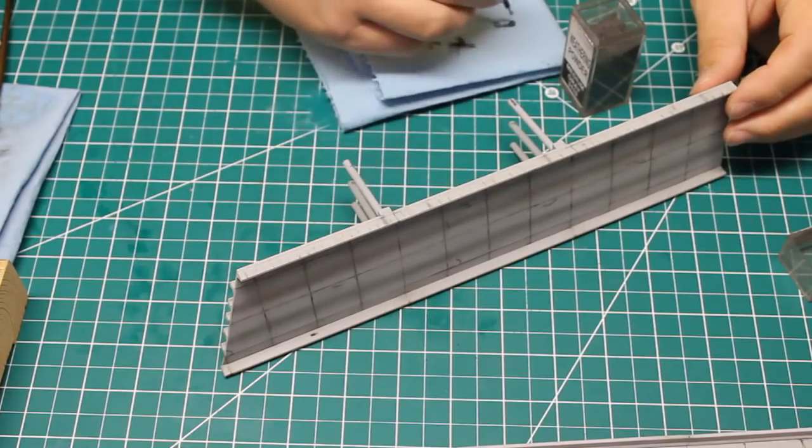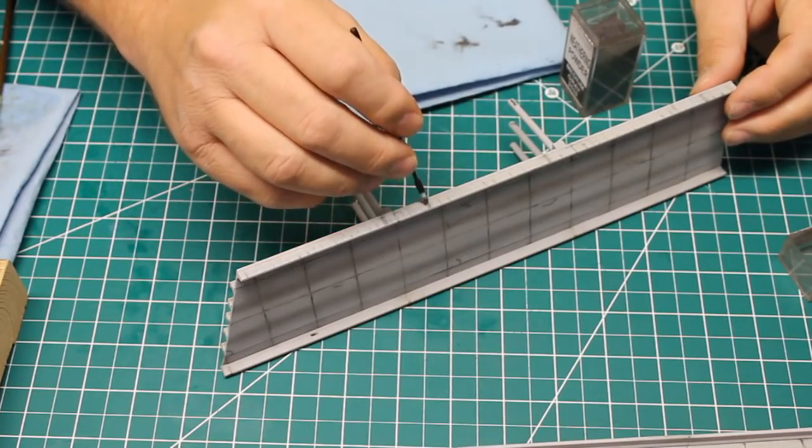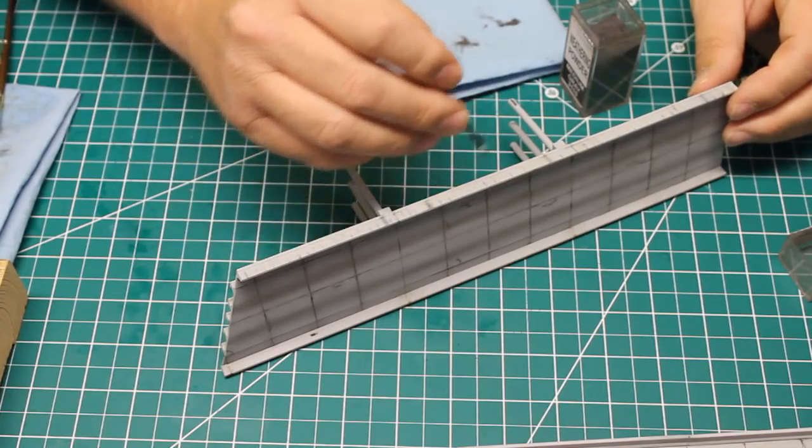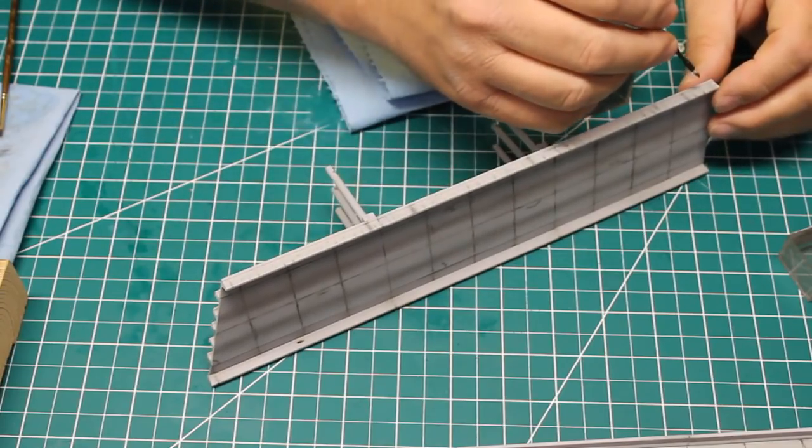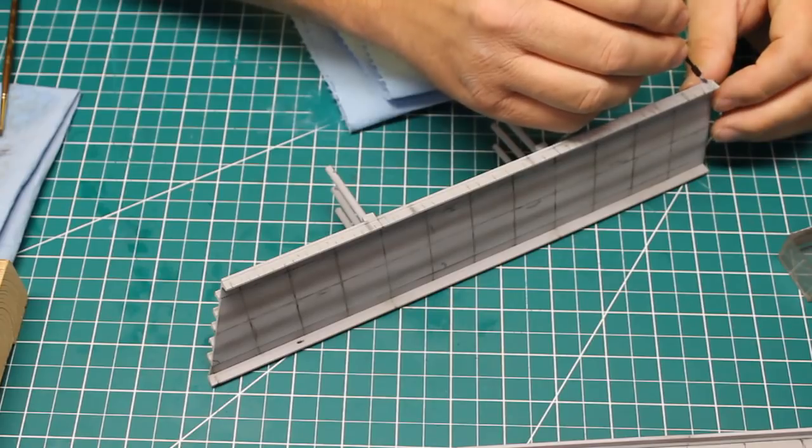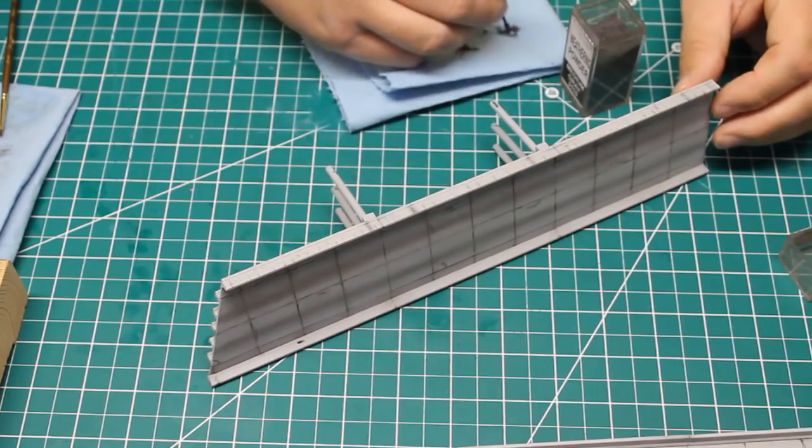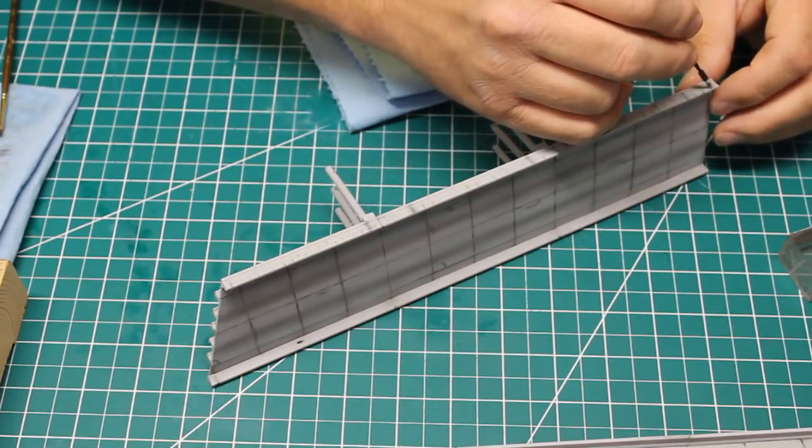When all of the weathering paint had completely dried, I added some general grime and feathered some of the streaks a bit using some more weathering powders. I again used the medium gray as well as a dark earth color from Monroe models. This added a lot of variety and texture to the model.